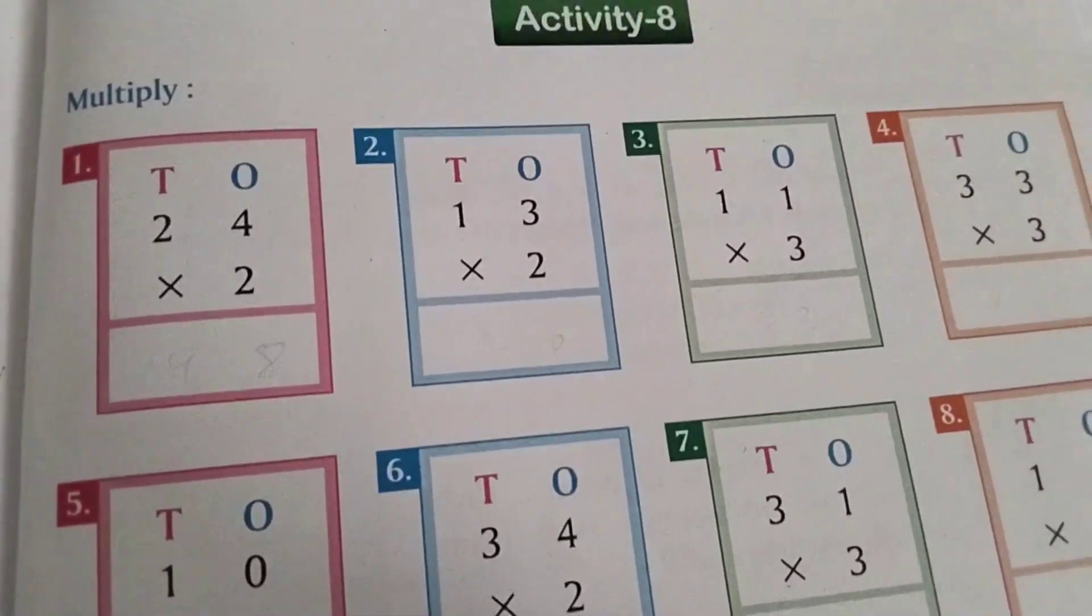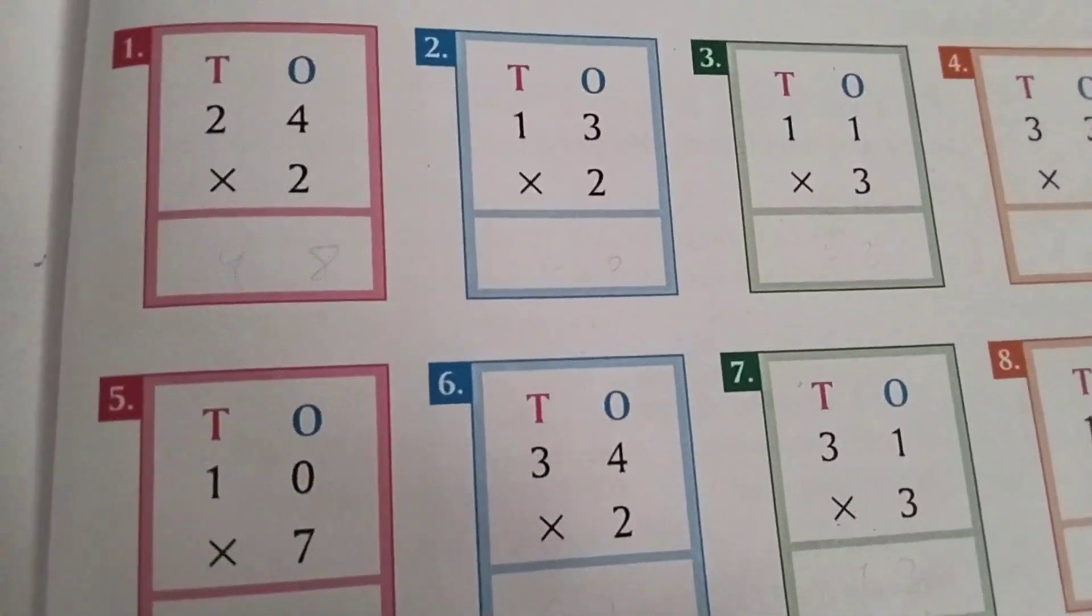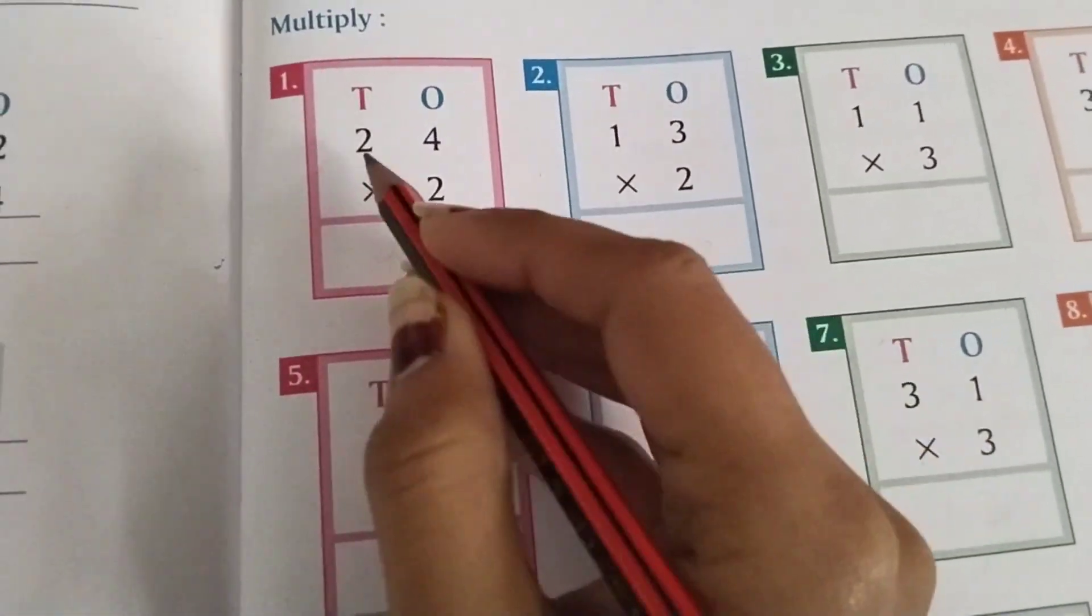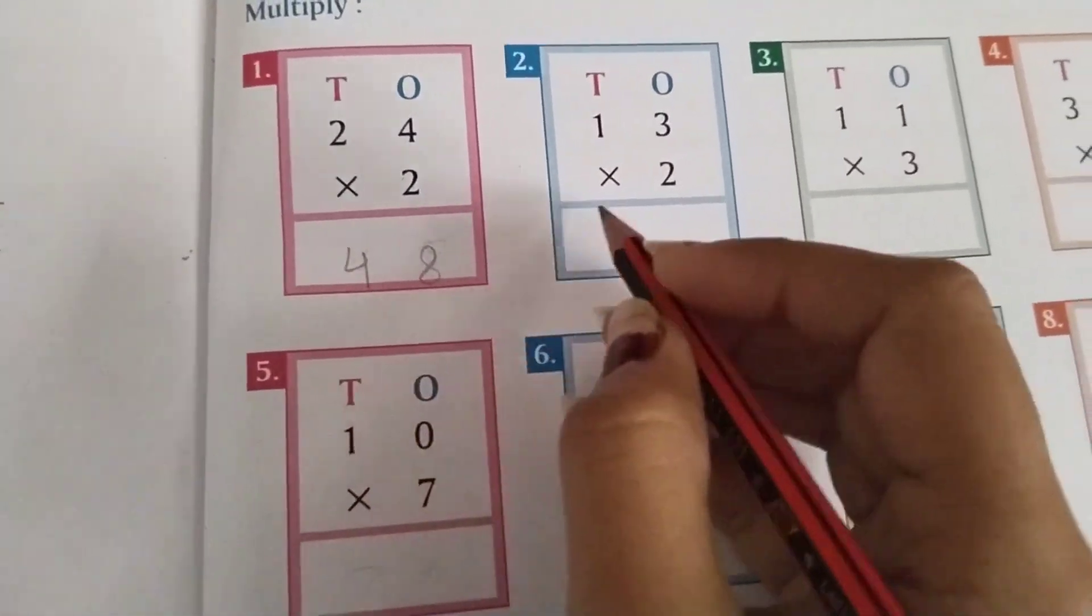So let's start with question number 1. 24 multiply 2. 2 4s are 8. 2 2s are 4. 48 will be the answer.